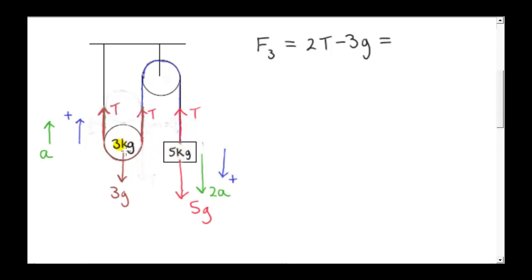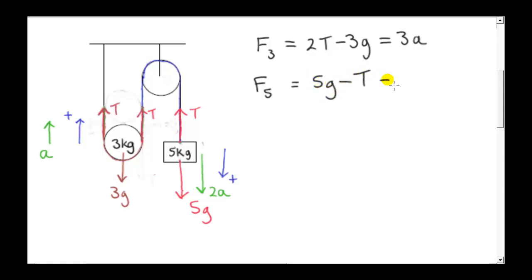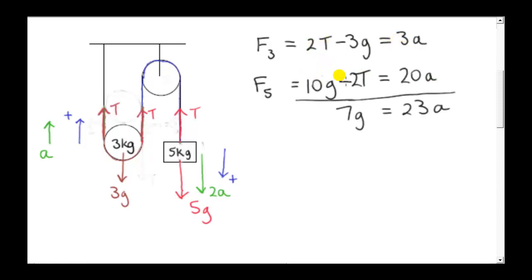Now we can solve the system. The resultant force on the three kilogram mass is 2T up and 3G down, so by Newton's second law that equals 3 times A. For the five kilogram mass, taking downward as positive, we have 5G minus T equal to 5 times 2A. To solve this system, we multiply the second equation by 2 and add it to the first equation — the T's cancel and we end up getting A equals 7 over 23 times G.